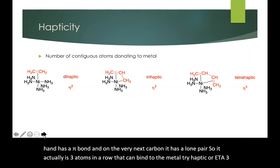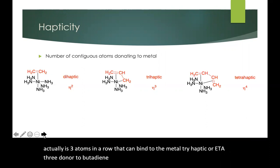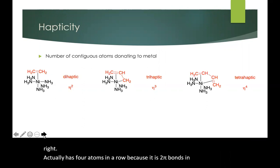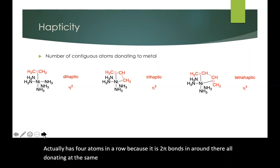The butadiene, if it's binding through both of its alkenes on the right, actually has four atoms in a row because it has two pi bonds in a row that are all donating at the same time. So that's an eta 4 donor.